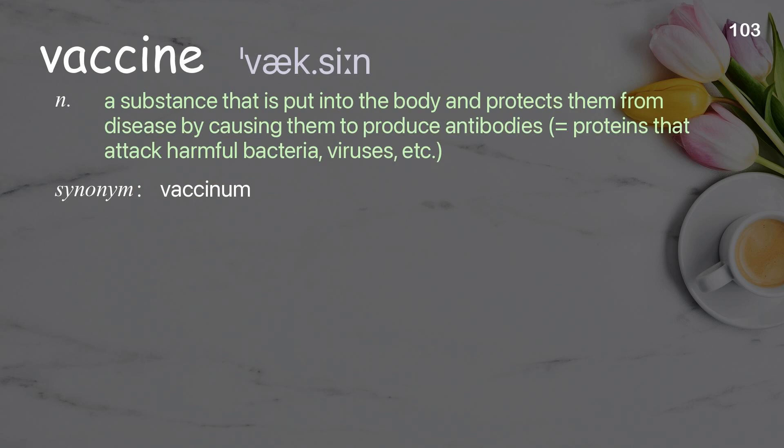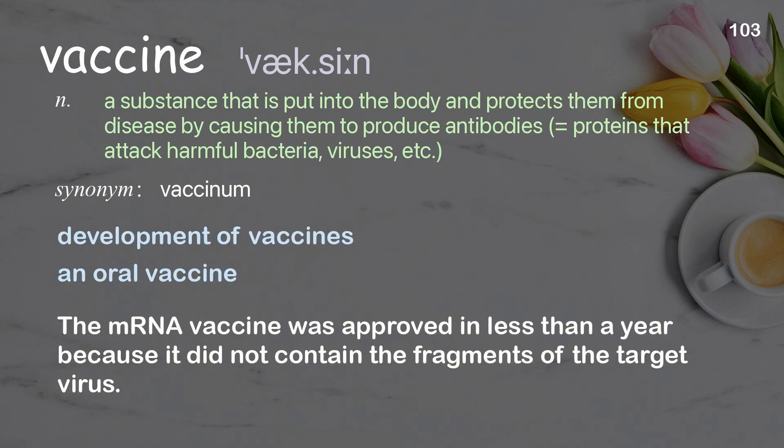Vaccine: a substance that is put into the body and protects them from disease by causing them to produce antibodies — proteins that attack harmful bacteria, viruses, etc. Examples: development of vaccines, an oral vaccine. The mRNA vaccine was approved in less than a year because it did not contain the fragments of the target virus.